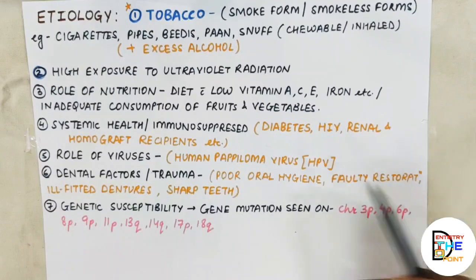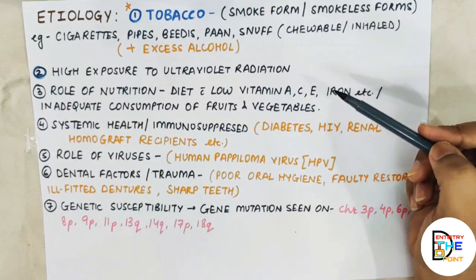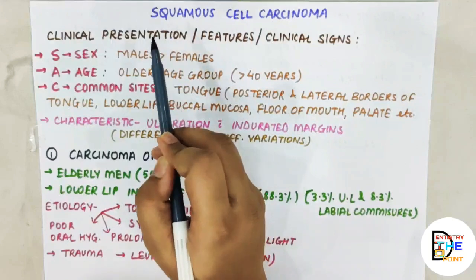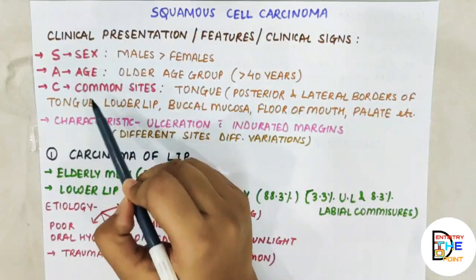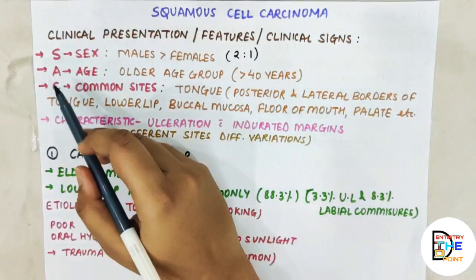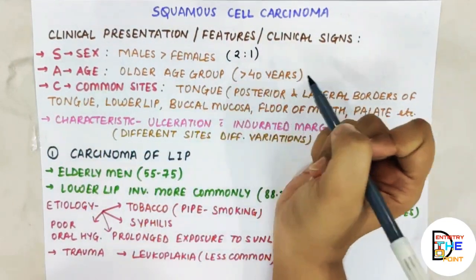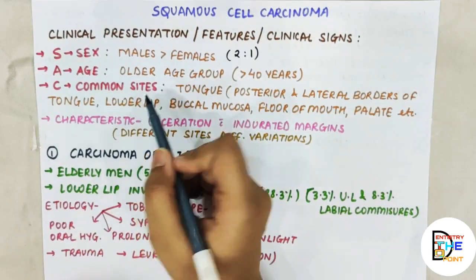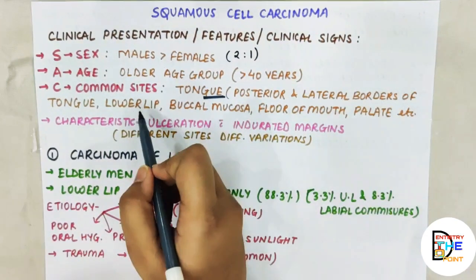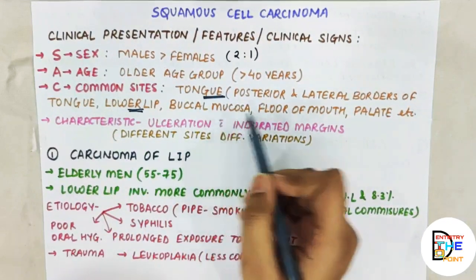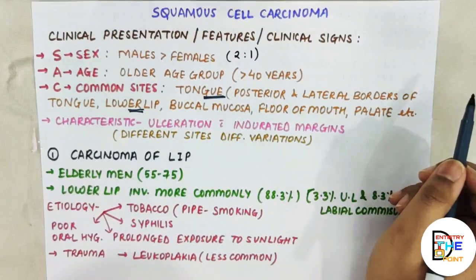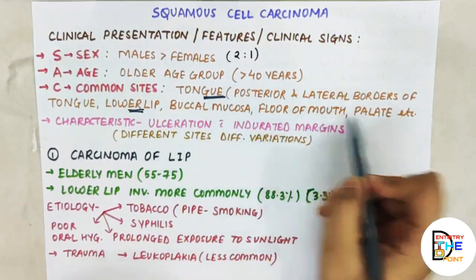Moving to clinical features: sex, age, and common sites (SAC). Males are more commonly affected than females, ratio two to one. Age group: older individuals above 40 years, typically 50 to 60 years. Common sites are firstly the tongue (posterior and lateral borders), then the lip (lower lip more common than upper lip), buccal mucosa, floor of the mouth, palate, maxillary sinus, labial mucosa, and gums. The commonest are tongue, lower lip, and buccal mucosa.